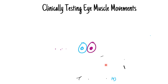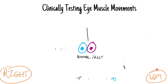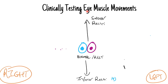We start with the normal position of gaze - looking straight out. Asking the patient to look straight up: the muscle involved is the superior rectus in both eyes. Looking straight down is your inferior recti in both eyes - those are the muscles you're isolating to test.